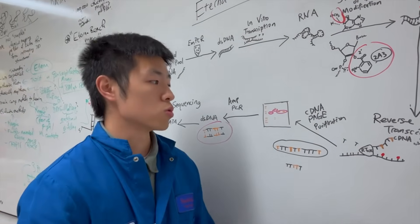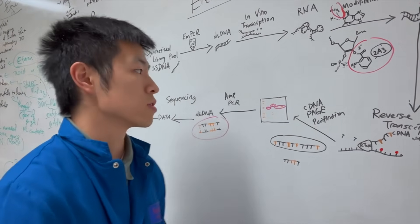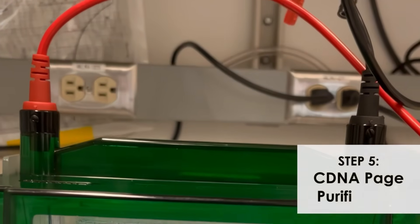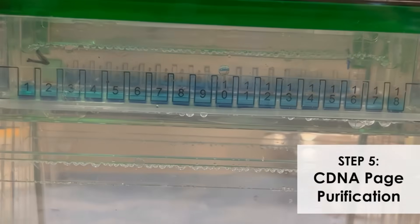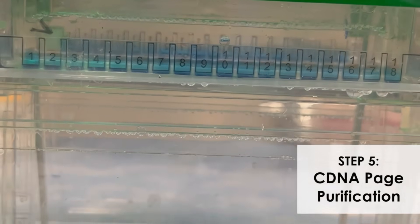So, we need to do a PAGE verification of the cDNA. Essentially, what happens here, I'm going to run our cDNA sample through this acrylamide gel. Different sizes of molecules are running at a different pace through the gel matrix. For example, smaller ones will run faster to the bottom, larger ones will get a little stuck at the top.